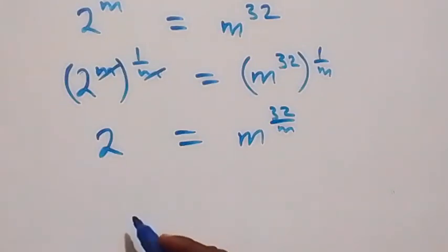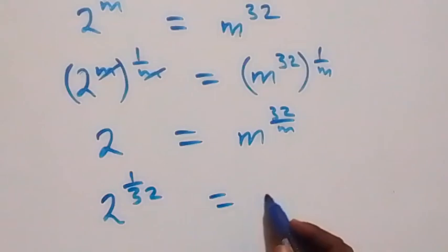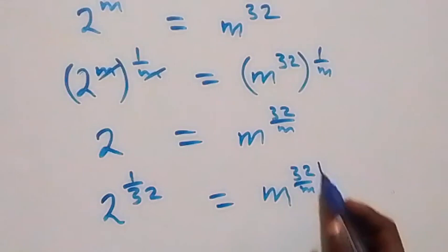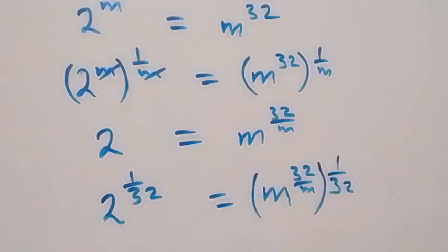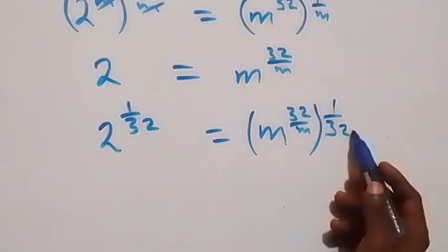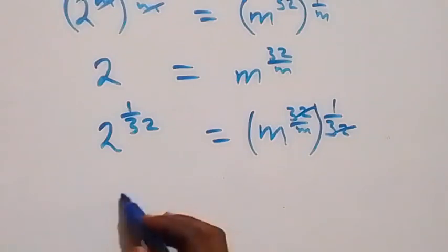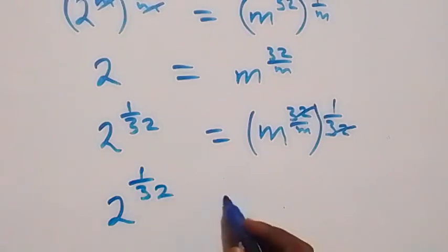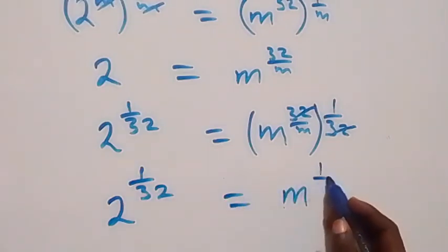Now let's raise both sides to the power 1 over 32. We have 2 raised to power 1 over 32, equals to m raised to power 32 over m, all raised to power 1 over 32. The 32s multiply and cancel out, so we have 2 raised to power 1 over 32 equals to m raised to power 1 over m.